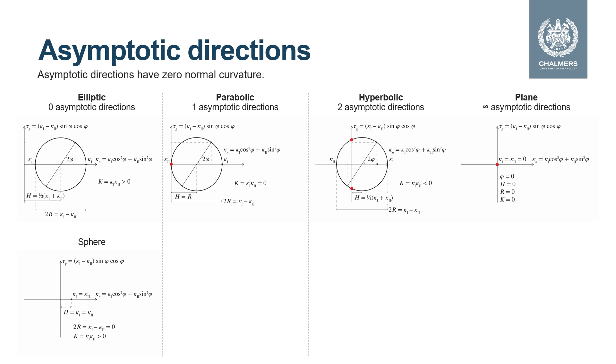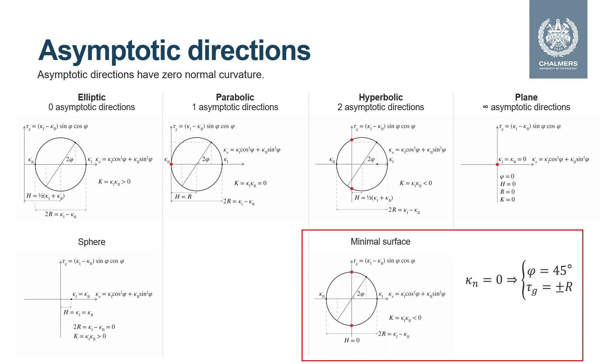A parabolic surface which only curves in one direction has exactly one asymptotic direction and a hyperbolic surface has exactly two. A plane has an infinite number of asymptotic directions. Minimal surfaces are a special case of hyperbolic surfaces and we can find that the asymptotic directions are always aligned at 45 degree angle to the principal curvature directions.